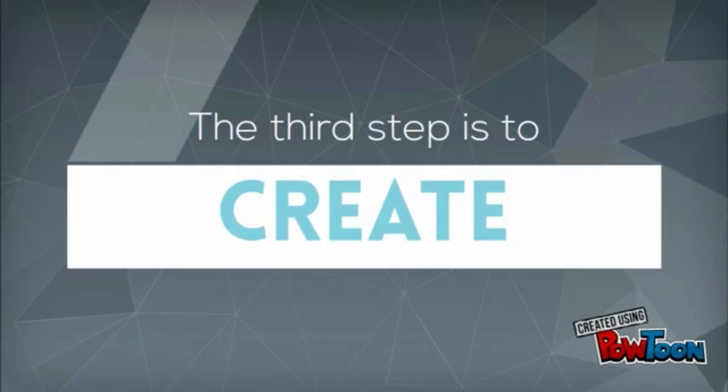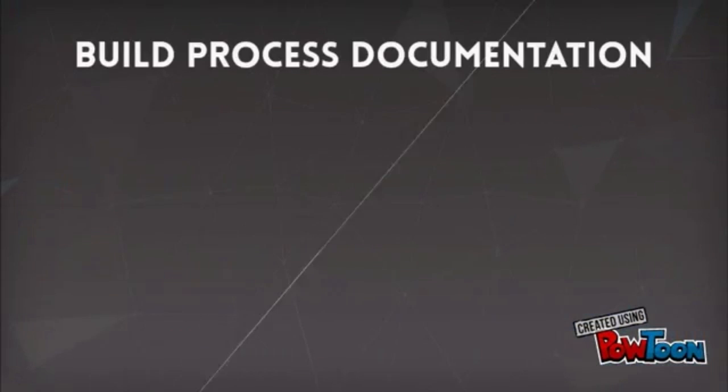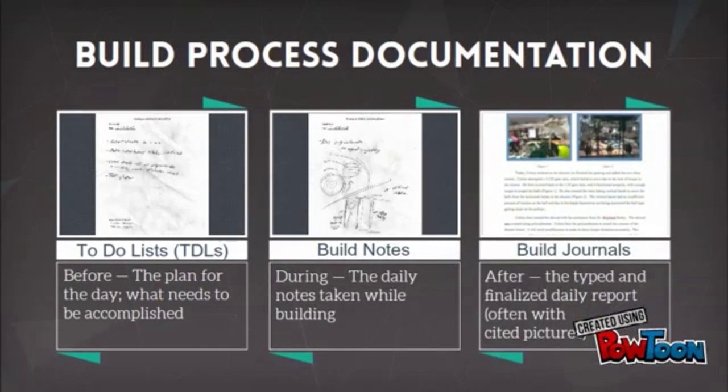Next is the third step in the design cycle, which is to create. There are three different types of documentation for the build process: to-do lists, build notes, and build journals for before, during, and after the build day.